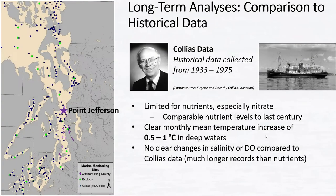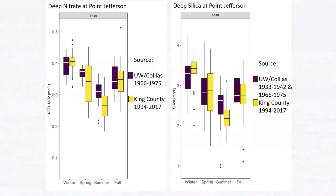Looking at the comparison over the last century, there was pretty limited data for nutrients, especially nitrate — nitrate analyses didn't really get improved until the 1960s. Levels are somewhat comparable. What was interesting is that there was a clear temperature increase in deep central Puget Sound waters, depending on the season — half to one degree — and no clear changes in salinity or dissolved oxygen, which had much longer records than nutrients. Deep nitrate concentrations are pretty comparable, with an interesting pattern in summer where historical concentrations were a bit higher. There's an opportunity to further explore the drivers for these long-term changes, and quality-controlling this dataset would benefit the community's understanding of how things have changed.